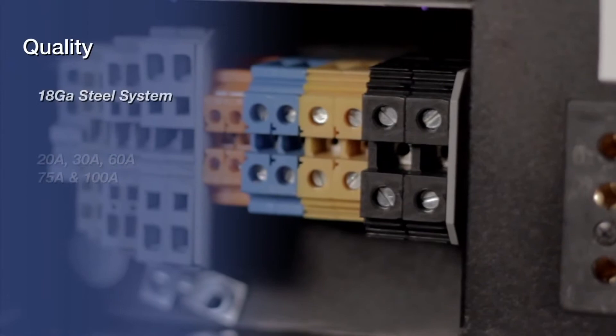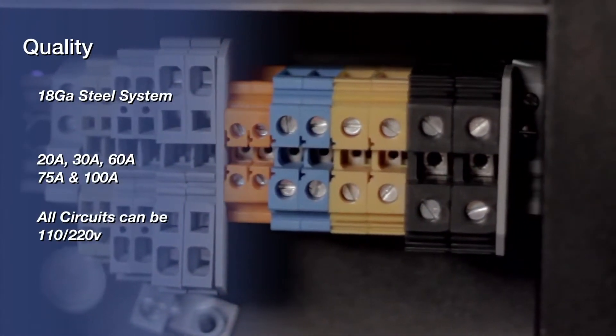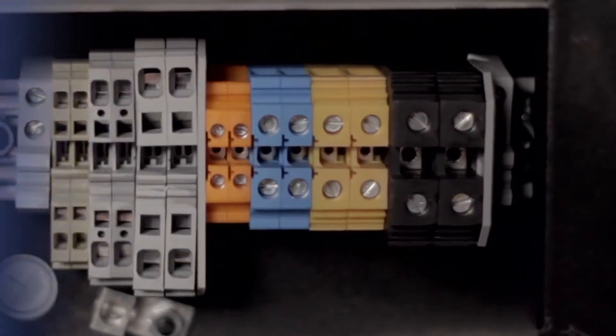Altman Lighting's 450 Series is an 18-gauge steel distribution system that can house 20, 30, 60, 75, and 100-amp 110-220 circuits.